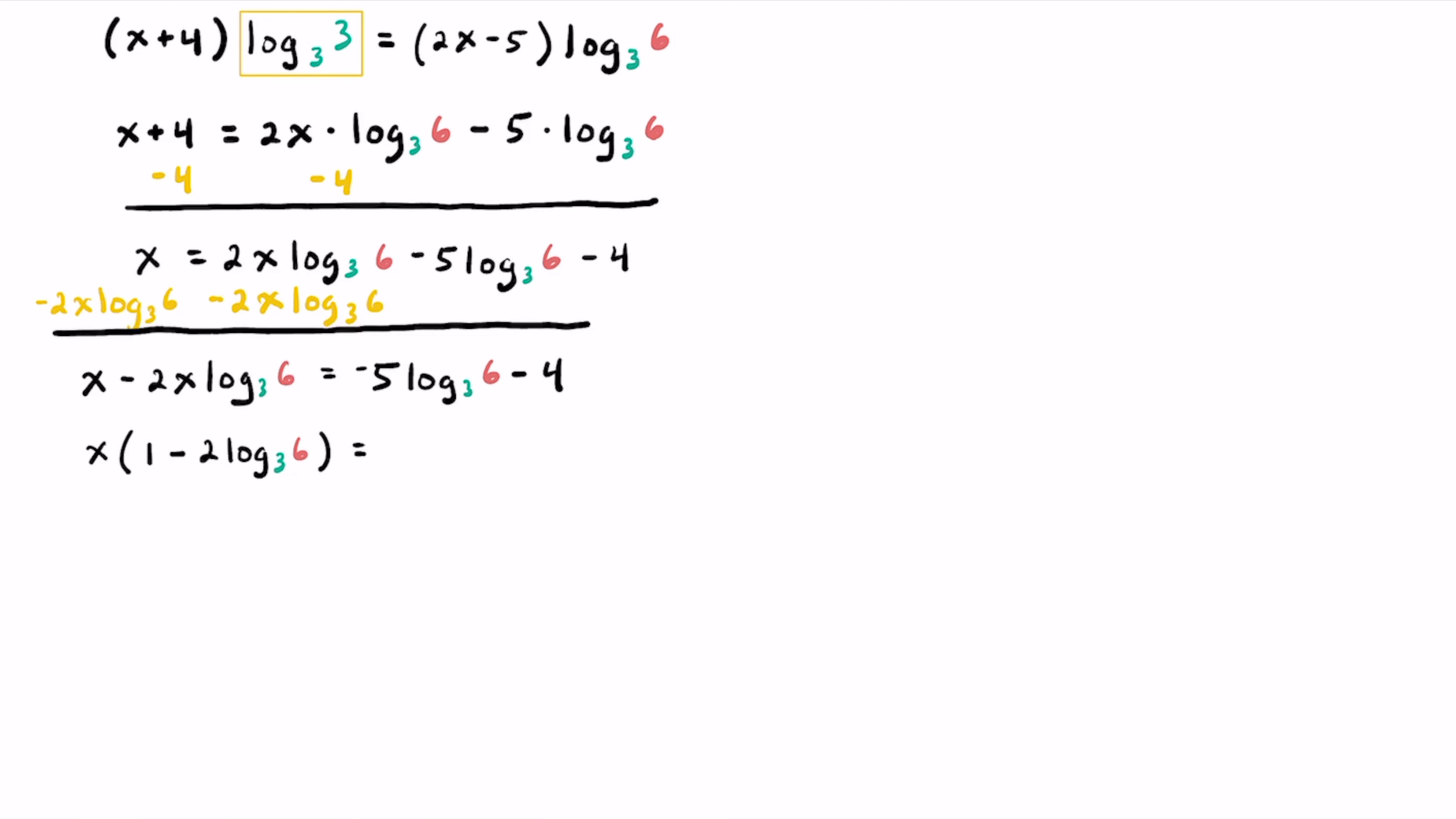And on the right side, instead of writing negative 5 times log base 3 of 6 minus 4, I'm actually going to write the minus 4 first, so it's not confusing as maybe part of the logarithm.